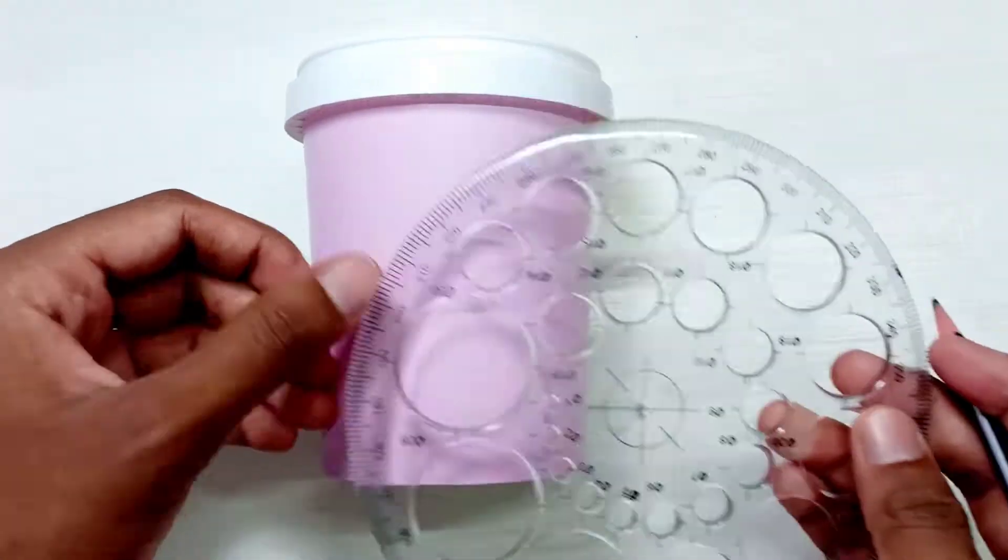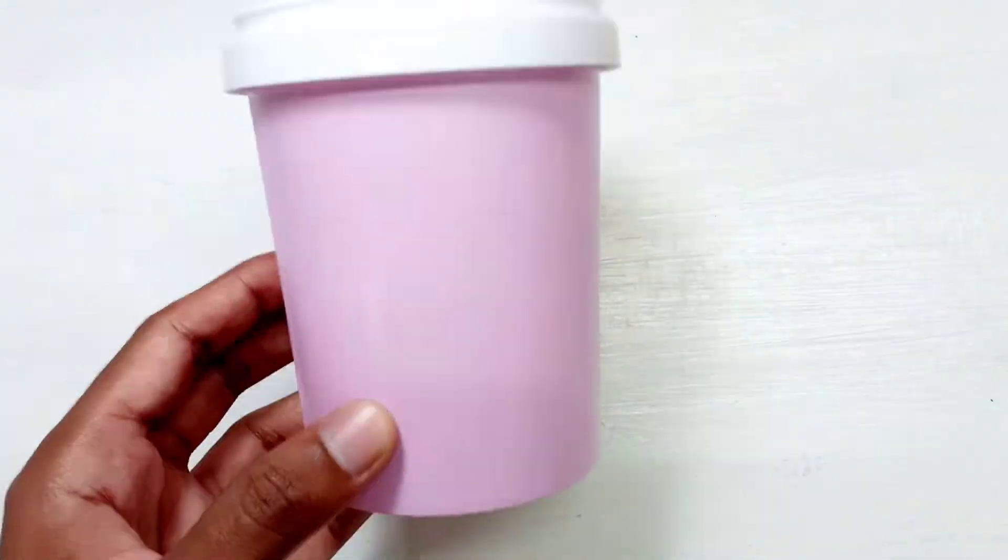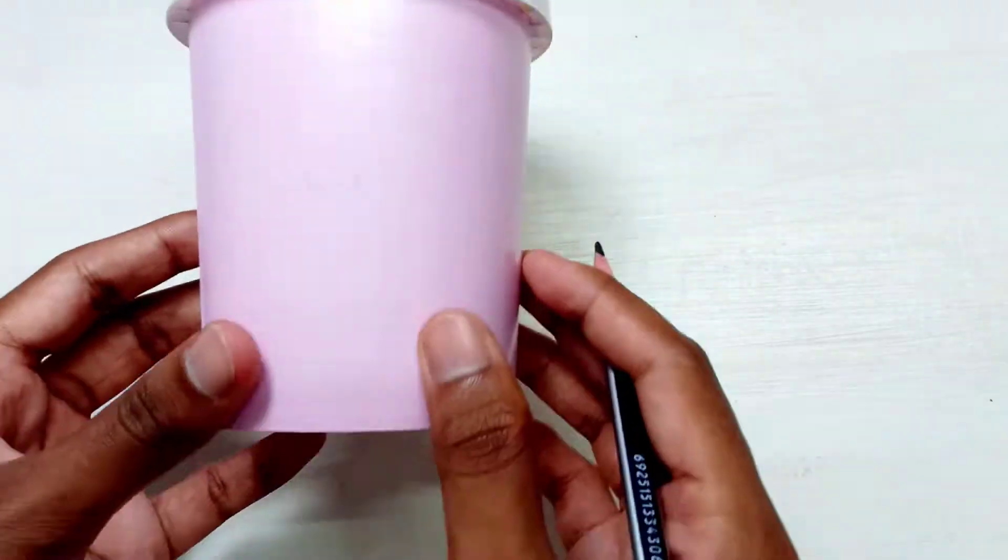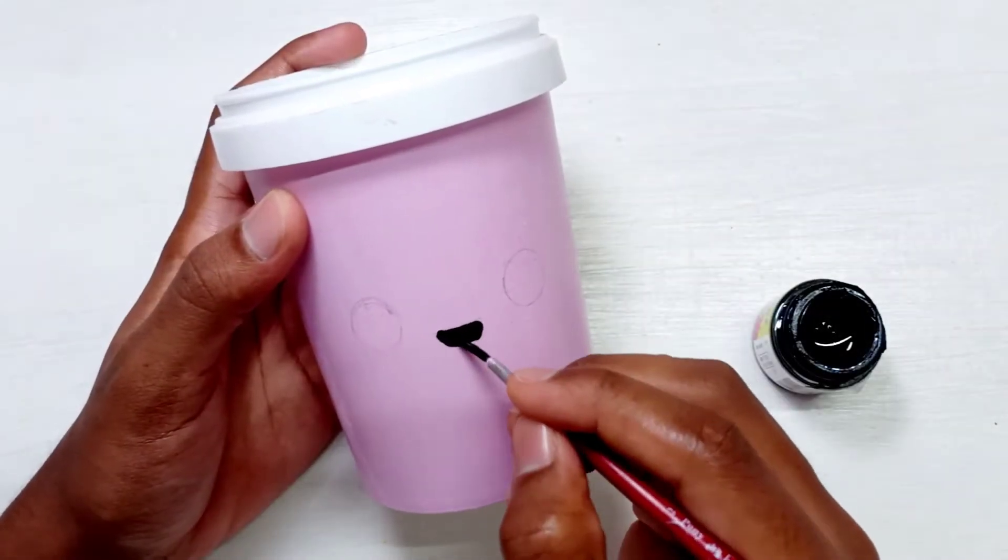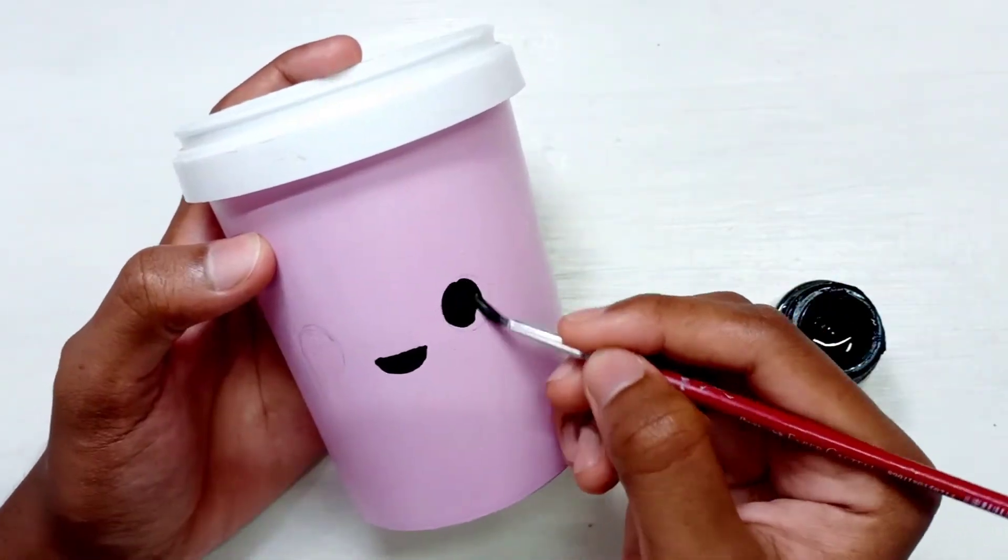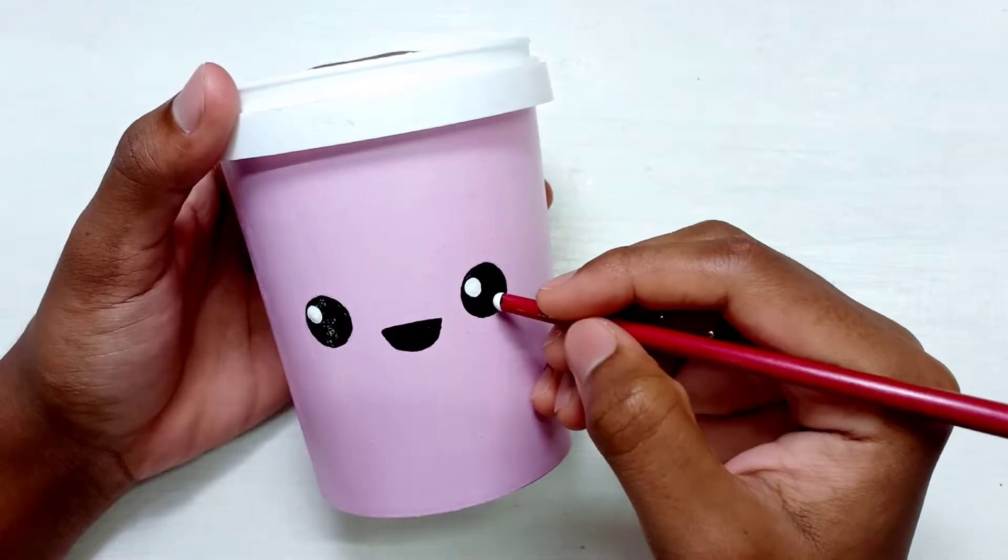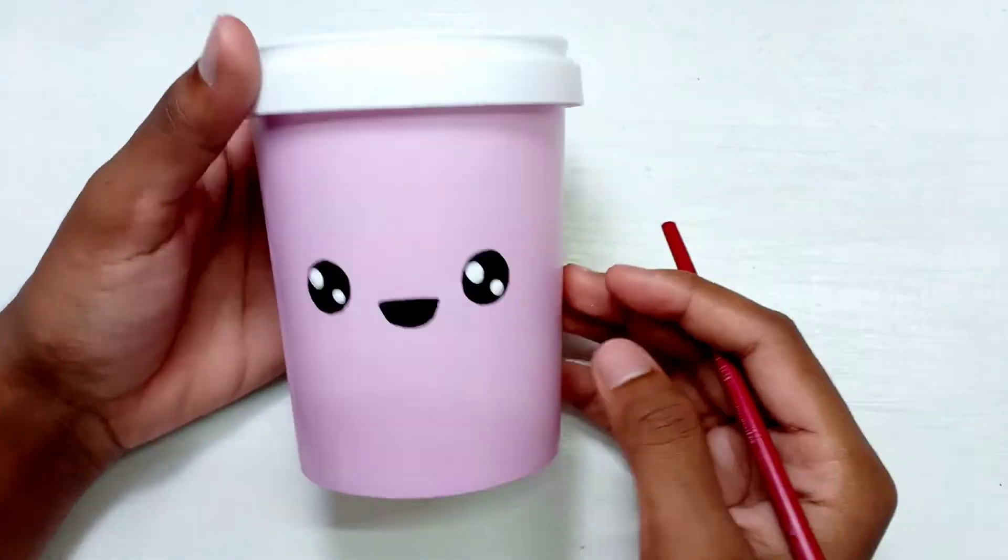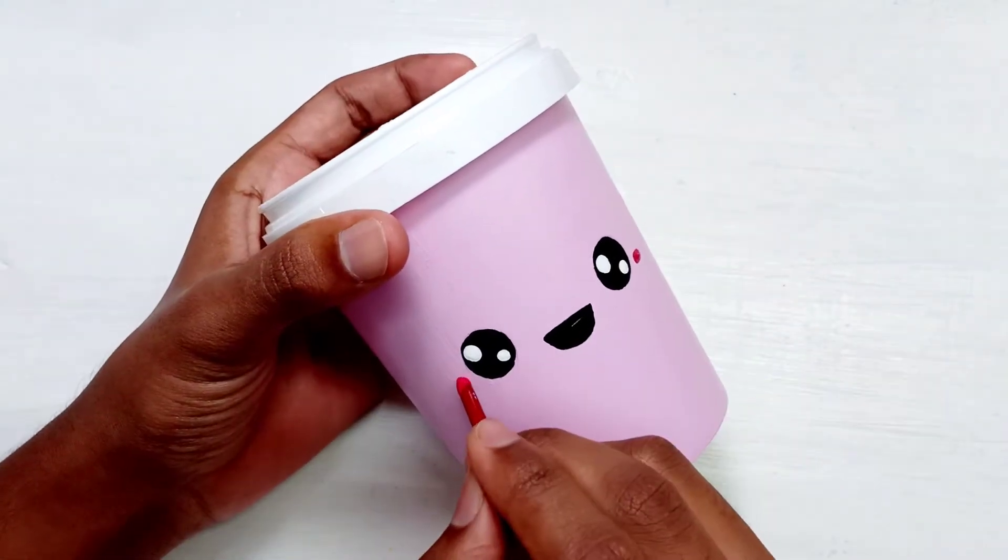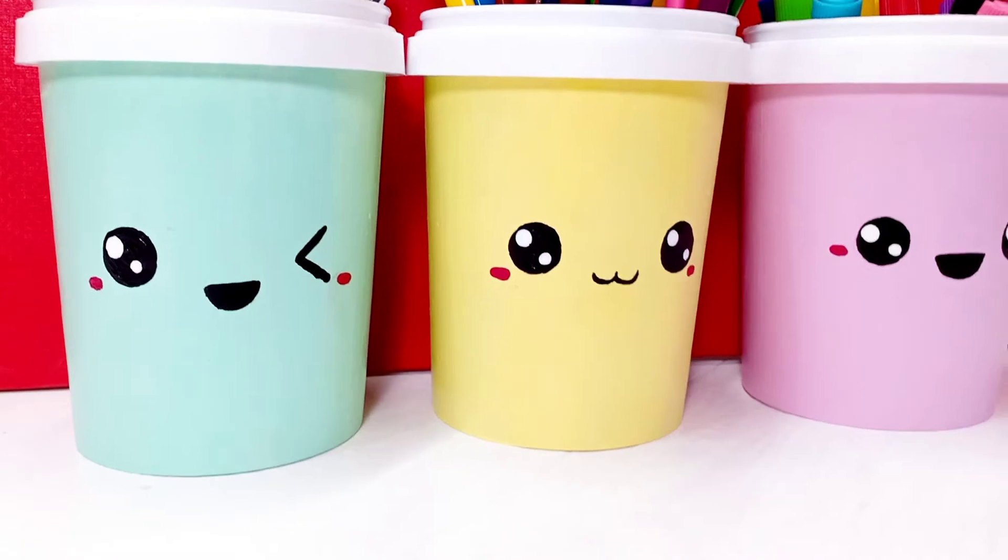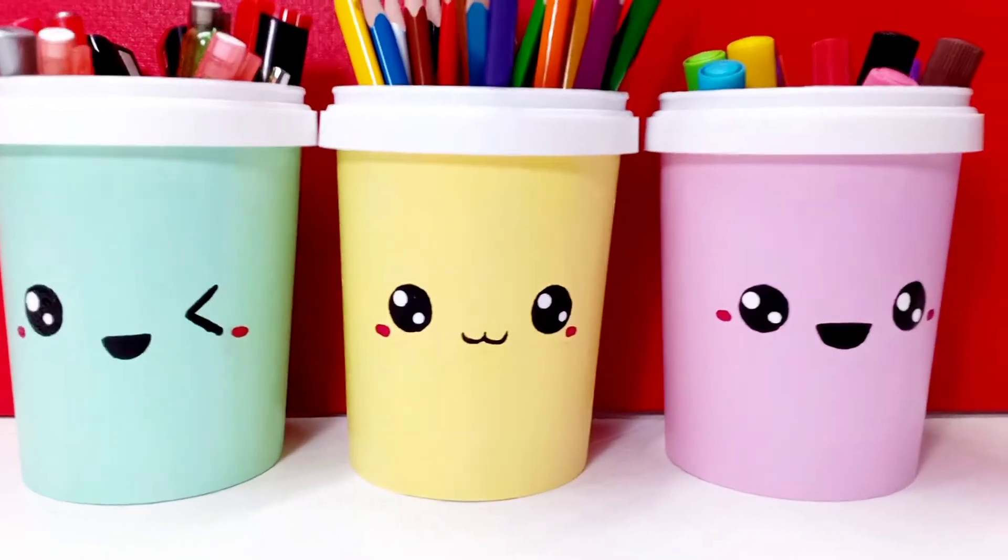It looks nice as it is, but to make it look cute, here I am going to draw eyes and mouth with a pencil. Then fill them up with some black acrylic paint. I am also adding in some dots inside the eyes and blushes using acrylic paint. With that the cute looking holders are done. You can pop in anything you want.